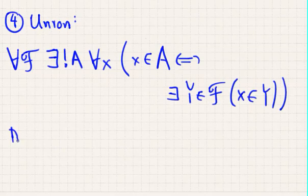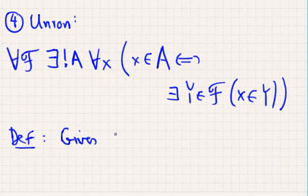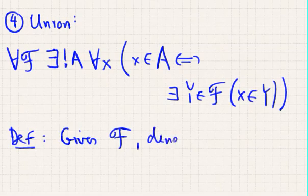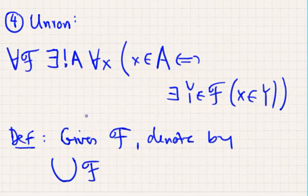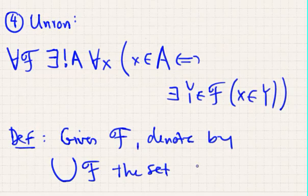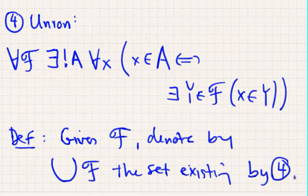Okay. And then we, definition, given f, denote by this u standing for union, union f, the set existing by four. Okay. So, to comment on why, so if you just go down, read down the line, we have really fancy letter, a capital letter, and then a lowercase letter.